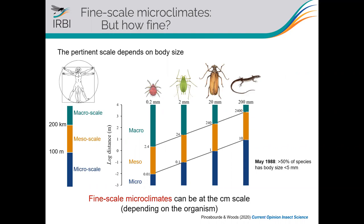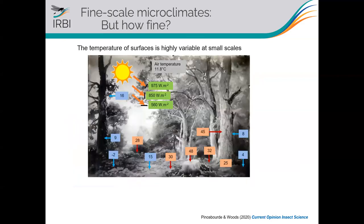It can be even one centimeter scale for very small spider mites. This is quite important because about half of all species in the world are below five millimeters in size. This is what we call fine-scale macroclimates — to put emphasis on the fact that we are working at very small scales. At such small scales, it's mostly surfaces and surface temperatures that matter, and very small insects will be greatly influenced by surface temperature.